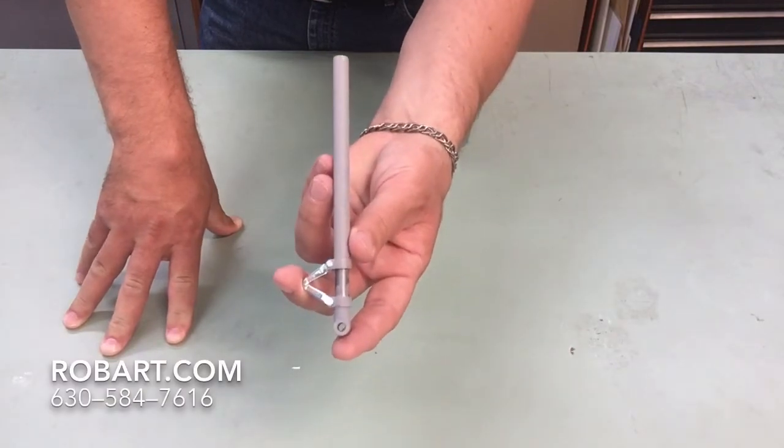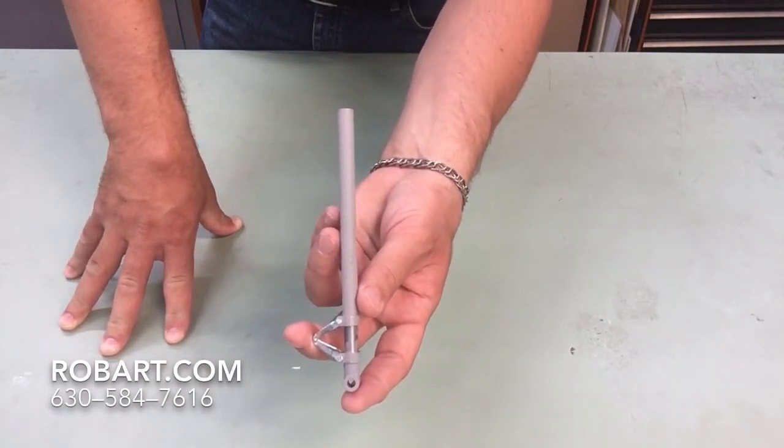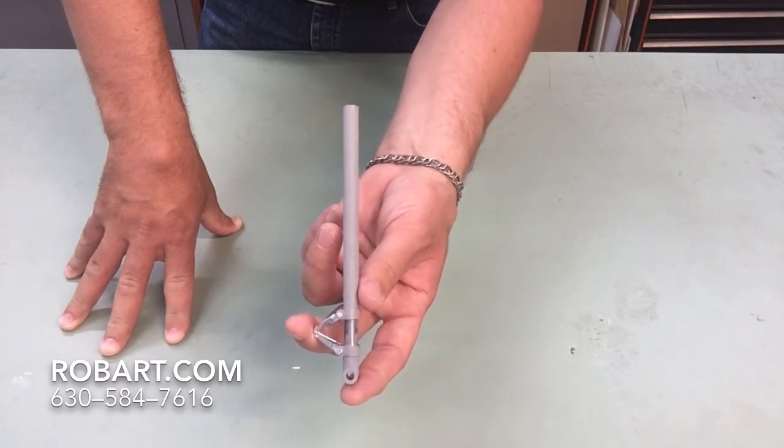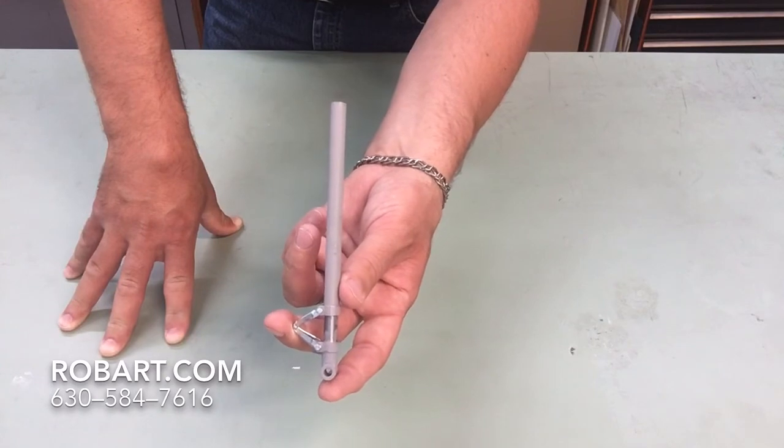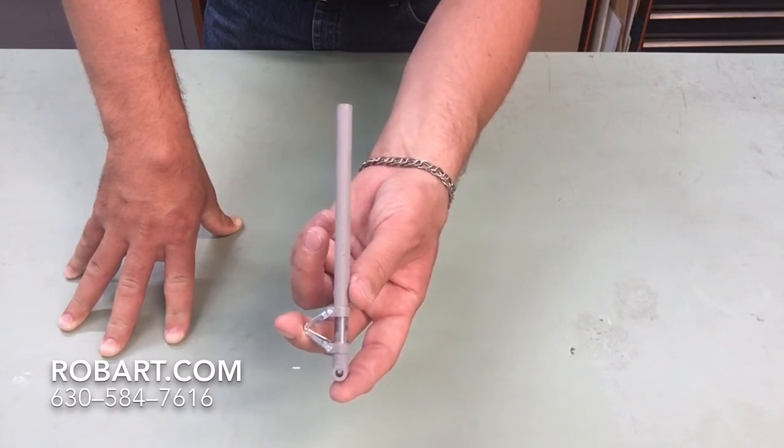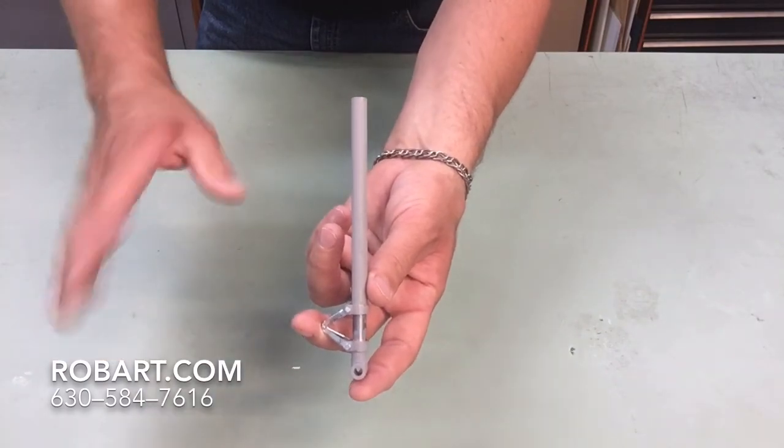So if you've got any further questions on how to cut down Robo Struts or any other Robart product, just give us a call at 630-584-7616, check us out online at www.robart.com, or follow us on Facebook, YouTube, Instagram, and Pinterest. Thank you so much, have a good day.